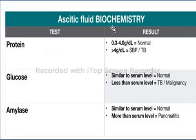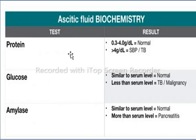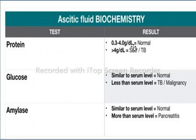The biochemical analysis of ascitic fluid can provide useful diagnostic information to help identify the actual cause of ascites. The table summarizes the typical pattern of biochemical findings associated with specific underlying diseases. If protein ranges from 0.3 to 4.0 gram per dL, it is considered normal.